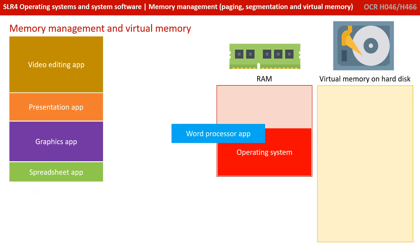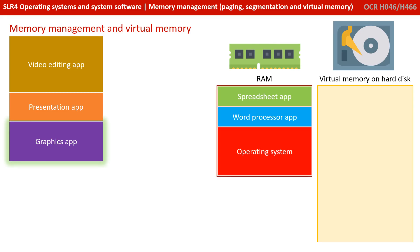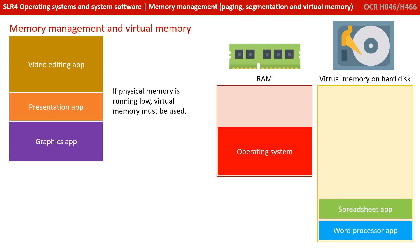When you turn your computer on, the bootstrap program will load the operating system from the disk into RAM. Every time you double-click an icon to load a program, it transfers those instructions into RAM. But what happens when you run out of RAM? As instructions are fetched one at a time, some of the instructions are not likely to be fetched in the near future. Therefore, one solution is to transfer instructions that are not being used to a space on the hard disk, and this is known as virtual memory.